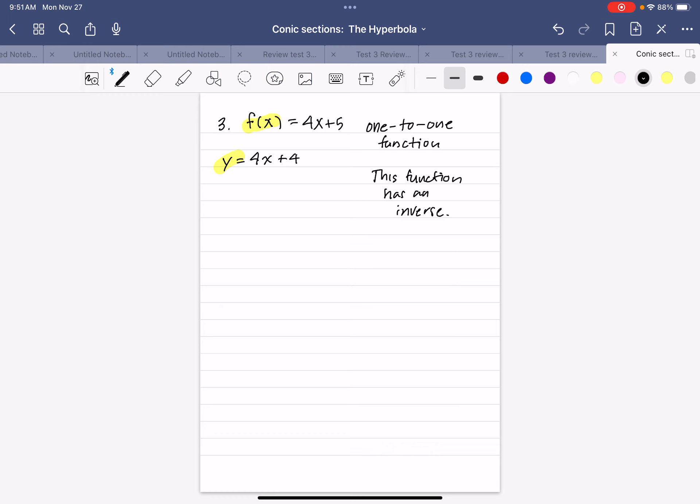Next, to find an inverse, we're going to switch x and y. So everywhere I have a y, I write an x. Everywhere I have an x, I write a y. Let me fix that, it's supposed to be a 5 right there.